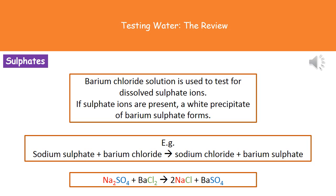The first of these was looking for sulfate ions. The way we do this experiment is to add a solution of barium chloride. If sulfate ions are present, we make a white precipitate of barium sulfate. For example, if we had sodium sulfate dissolved in water we wouldn't see it, but if we add barium chloride we then make sodium chloride and barium sulfate, and we would see that barium sulfate as a white precipitate in our tube.